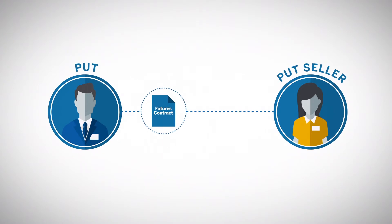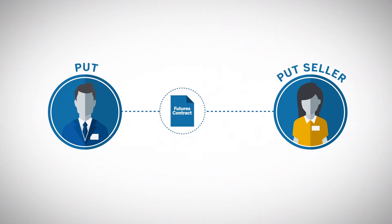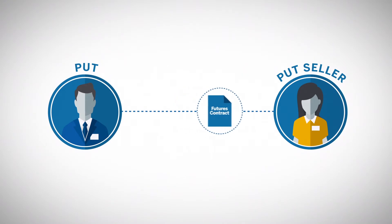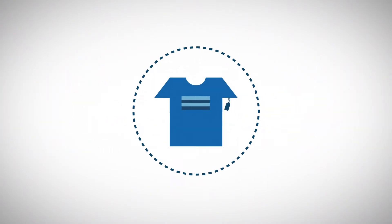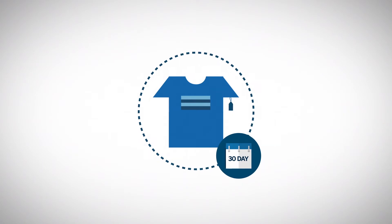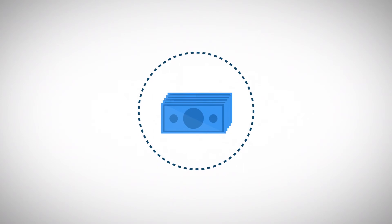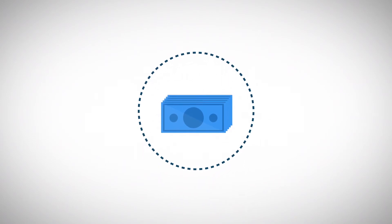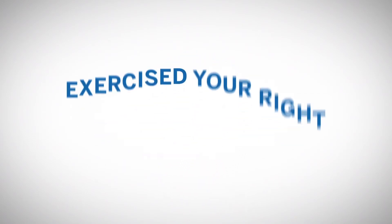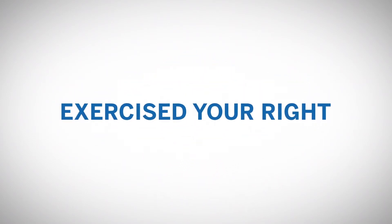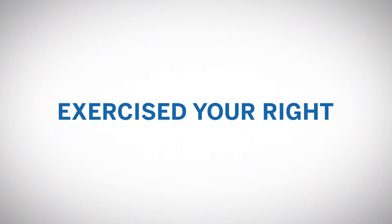Similarly, a put option gives the owner of the option the right to put the underlying future to the seller of the option. Think of it this way: if a store offers a 30-day return policy, that is like a put. You can put the item back on the store's shelf and get a refund. If you return the item to the store, you have exercised your right to sell the item back to the store.